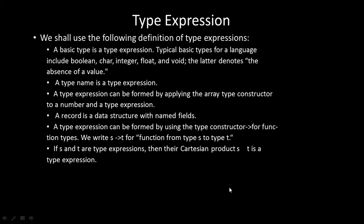A type expression can be formed by applying the array type constructor to a number and a type expression. We also define type expressions as a record — a data structure with named fields. A type expression can also be formed using the type constructor arrow (→) for function types: we write S → T for a function from type S to type T. If S and T are type expressions, then the Cartesian product S × T is also a type expression.